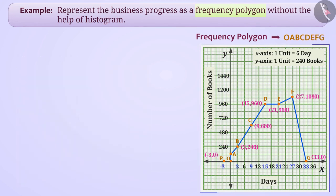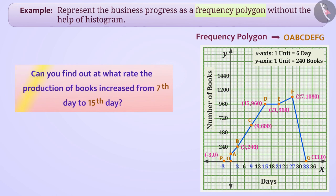By looking at this frequency polygon, we can get various information. Like, the production of books increased till the 15th day, then remained steady till 21st day, then increased till 27th day and then decreased. Can you find out at what rate the production of books increased from 7th day to 15th day? Do discuss it with your friends and find out the answer.